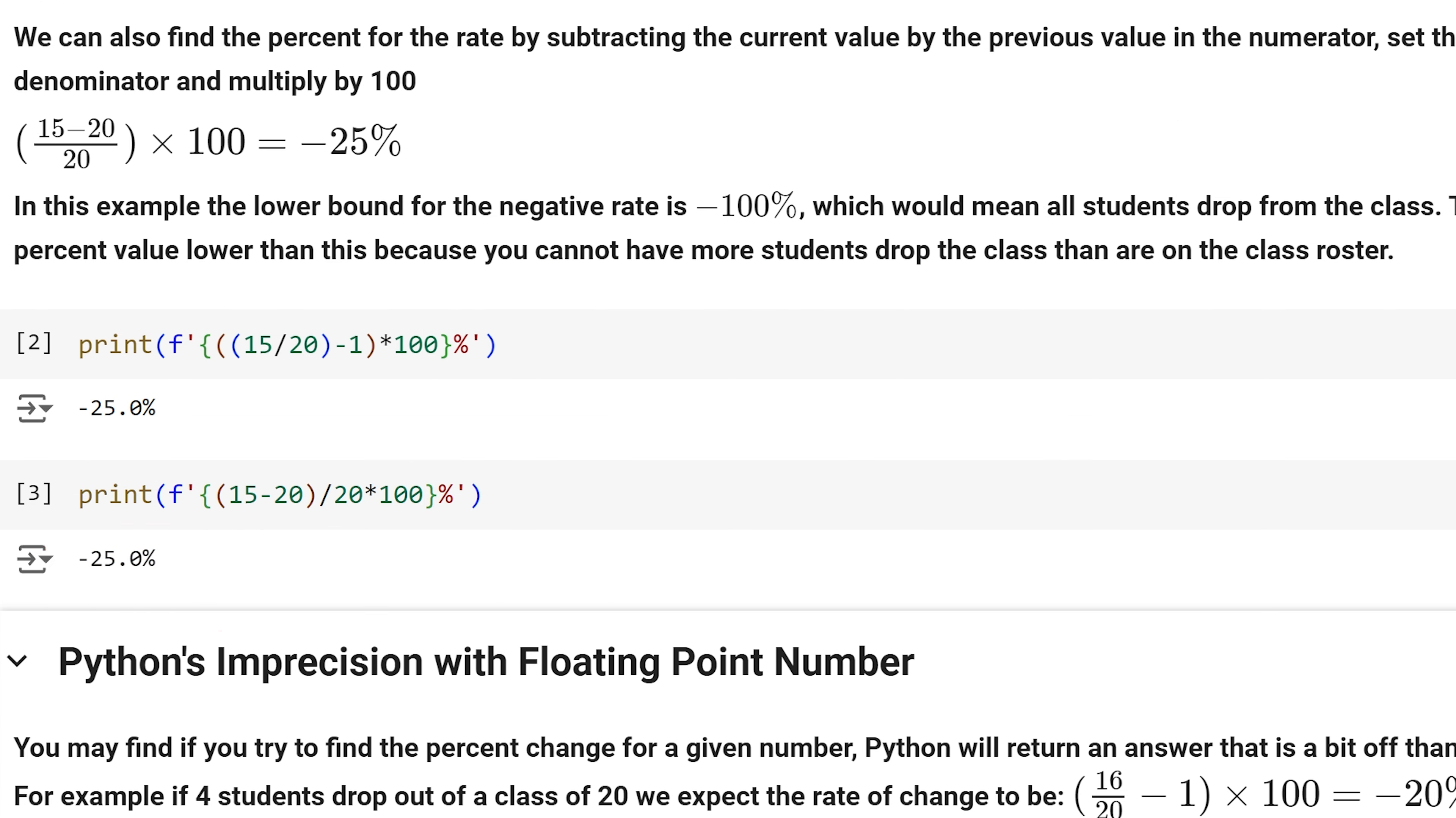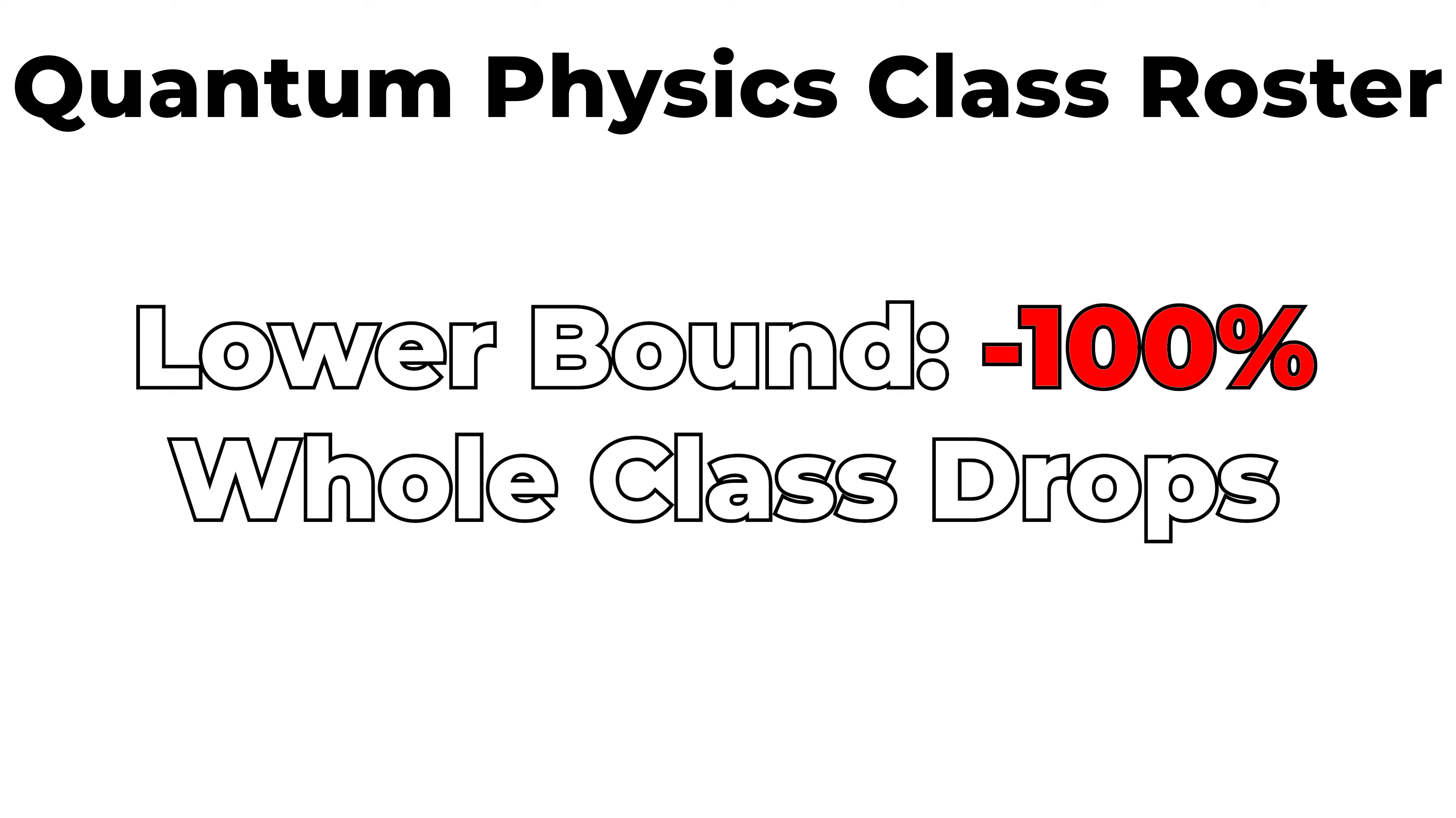In this example, the lower bound for the negative rate is negative 100 percent, which would mean all students drop from the class. There cannot be a percent value lower than this, because you cannot have more students drop the class than are on the class roster.